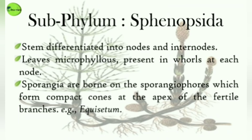Next is the subdivision Sphenopsida. In Sphenopsida, the stem is differentiated into nodes and internodes. Their leaves are microphylls present in whorls at each node. Their sporangia are borne on sporangiophores, which form compact cones at the apex of the fertile branches. The example of Sphenopsida is Equisetum.